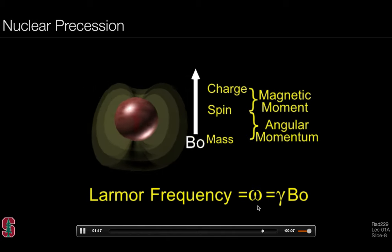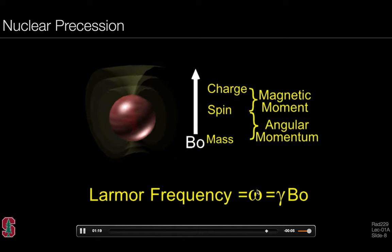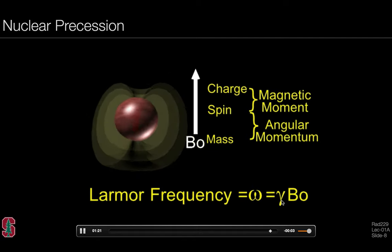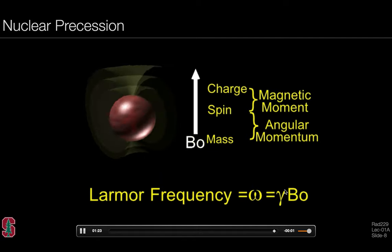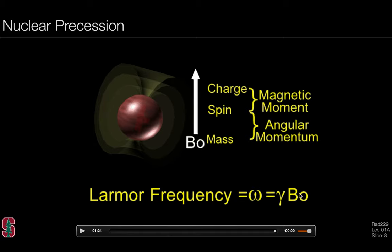This equation describes that the precessional frequency omega is equal to the gyromagnetic ratio times the externally applied B0 field. In this lecture, we'll develop the mathematics behind where this Larmor equation actually comes from, as a consequence of the equation of motion.